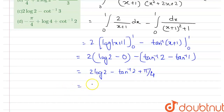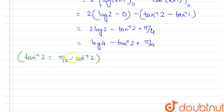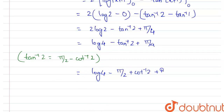Now, 2 log 2 can be written as log 2² = log 4, so we have log 4 − tan⁻¹(2) + π/4. Also note that tan⁻¹(2) can be written as π/2 − cot⁻¹(2). So we replace tan⁻¹(2) with π/2 − cot⁻¹(2), giving log 4 − π/2 + cot⁻¹(2) + π/4. After simplifying, we get log 4 + cot⁻¹(2) − π/4.